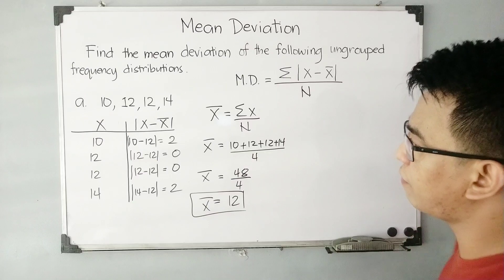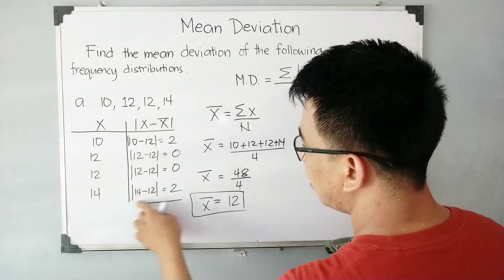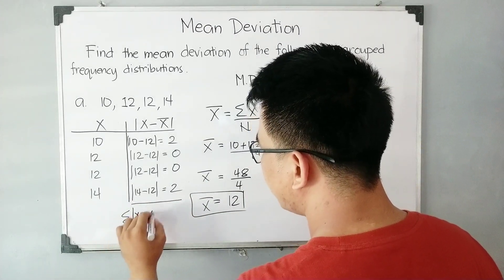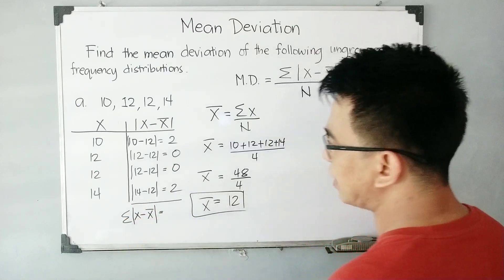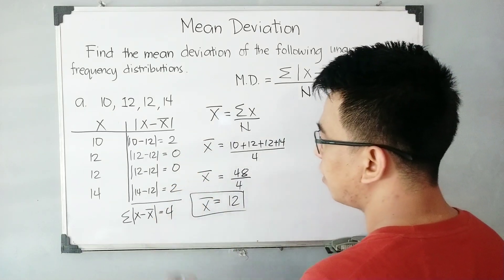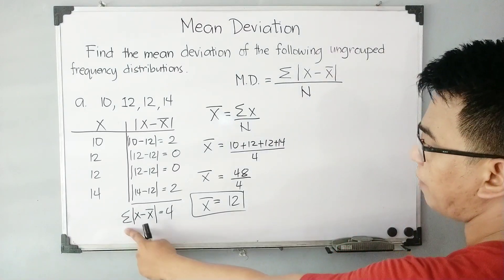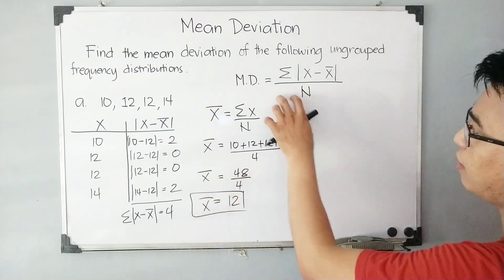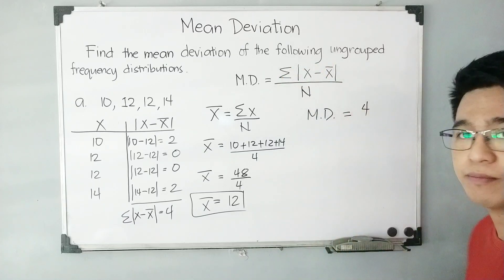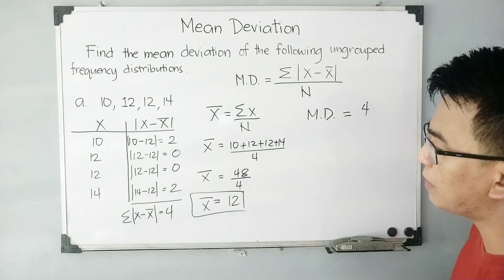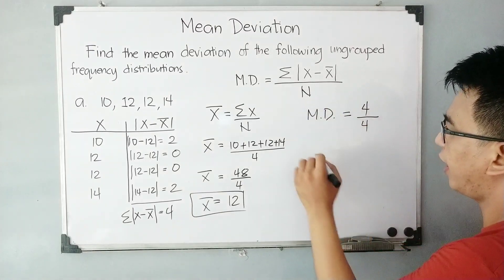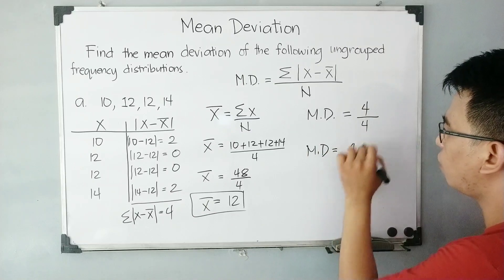Since we already have this column, we need to find the summation of the absolute value of x minus x-bar. This is not difficult, because all we need to do is add these numbers: 2 plus 0 plus 0 plus 2 is equal to 4. Meaning, the summation of the absolute value of x minus x-bar is 4. Using this formula, the mean deviation is equal to 4 over n, which is 4. Simply, the mean deviation of the given data set is equal to 1.